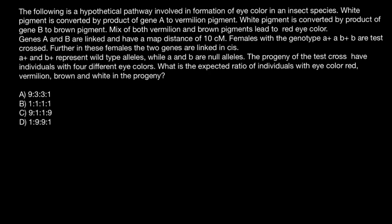Hello and welcome to Nikolai's genetics lessons. Today's problem comes from one of my subscribers. The following is a hypothetical pathway involved in formation of eye color in an insect species: white pigment is converted by the product of gene A to vermilion pigment; white pigment is also converted by the product of gene B to brown pigment; a mix of both vermilion and brown pigments leads to red eye color.